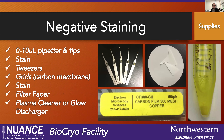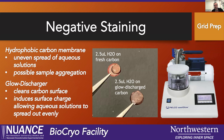Negative staining is a really swift sample prep technique. All you need are some pipetters, your heavy metal stain, some tweezers, and grids with a carbon membrane — you can't use plain grids. The grids I prefer are 300 mesh copper with a carbon membrane from EMS. You'll also want some filter paper, and it's good to cut those into little wedges. And then there's the plasma cleaner or glow discharger. I recommend this to everyone — it's useful for negative staining, cryo-TEM, and even ultramicrotomy.